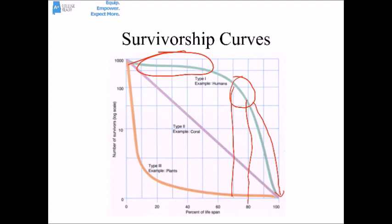That's a type 1 survivorship curve — the kind we would see in people, elephants, and large mammals.